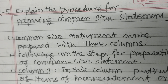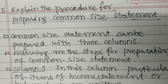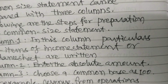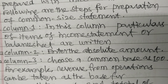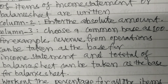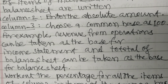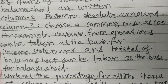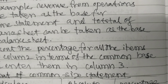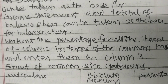Question 5: Explain the procedure for preparing common size statement. Common size statement can be prepared with three columns. Following are the steps. Column 1: Particulars of items of income statement or balance sheet are written. Column 2: Enter the absolute amount. Column 3: Choose a common base as 100. For example, revenue from operations can be taken as the base for income statement and total of the balance sheet can be taken as the base for balance sheet. Work out the percentage for all items of Column 2 in terms of common base and enter them in Column 3.